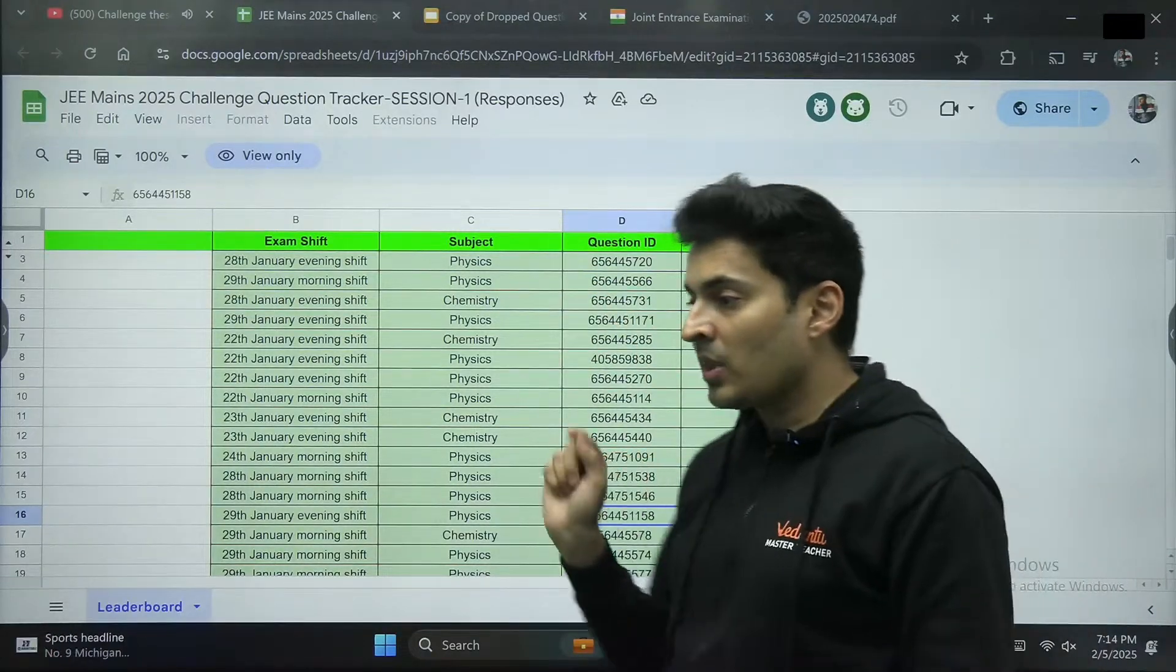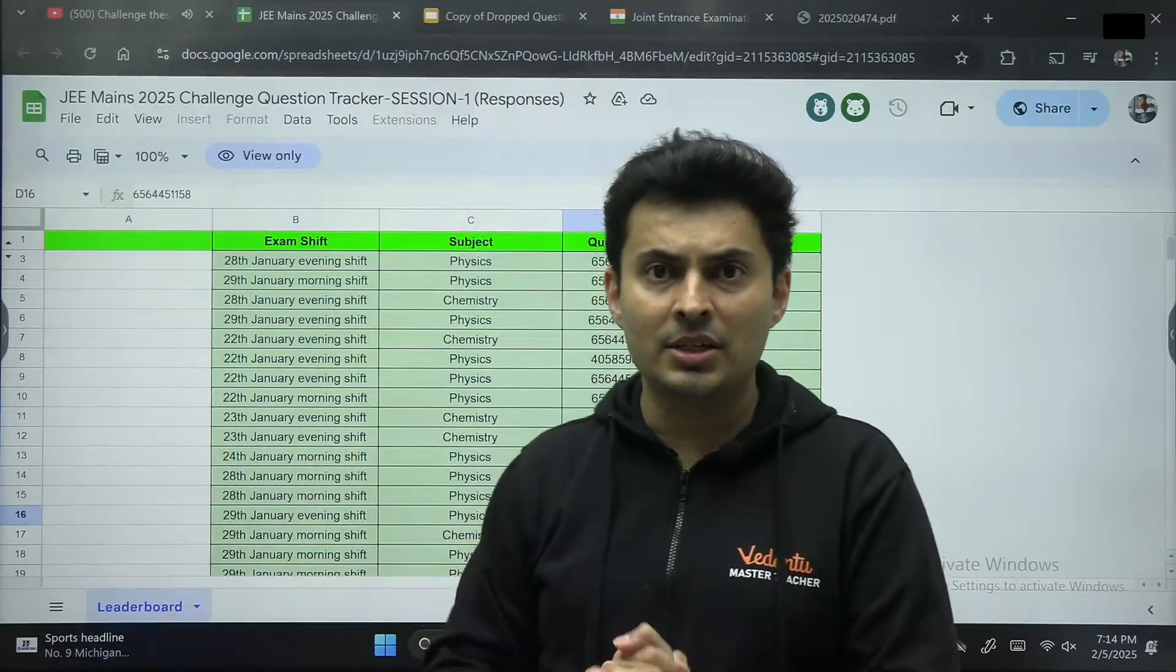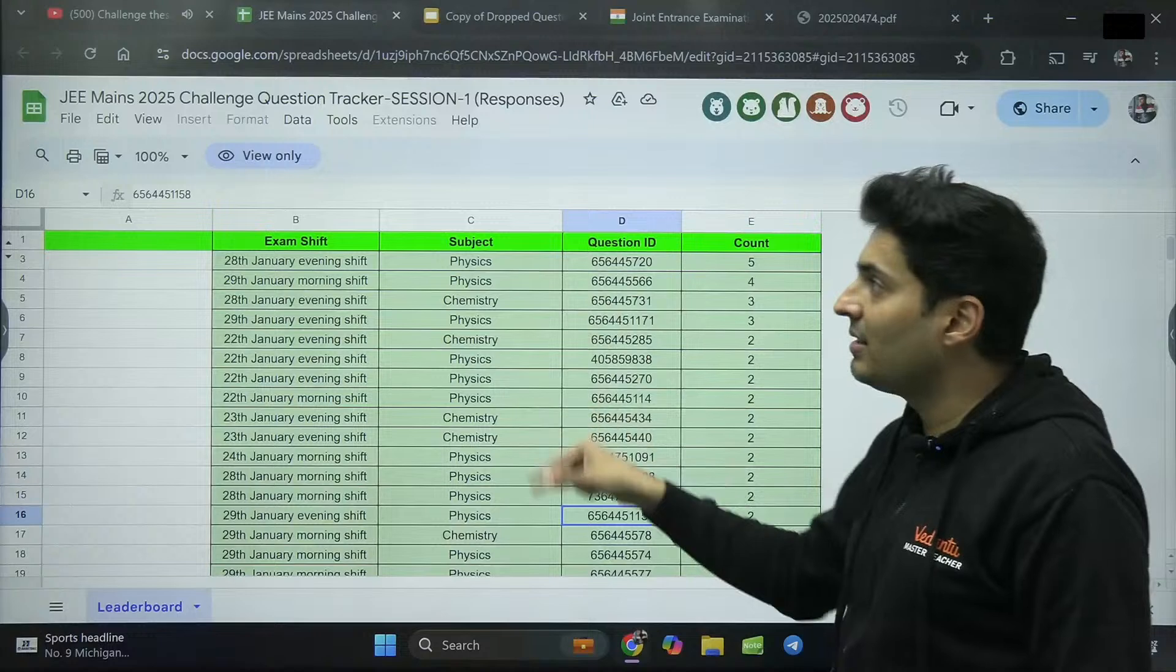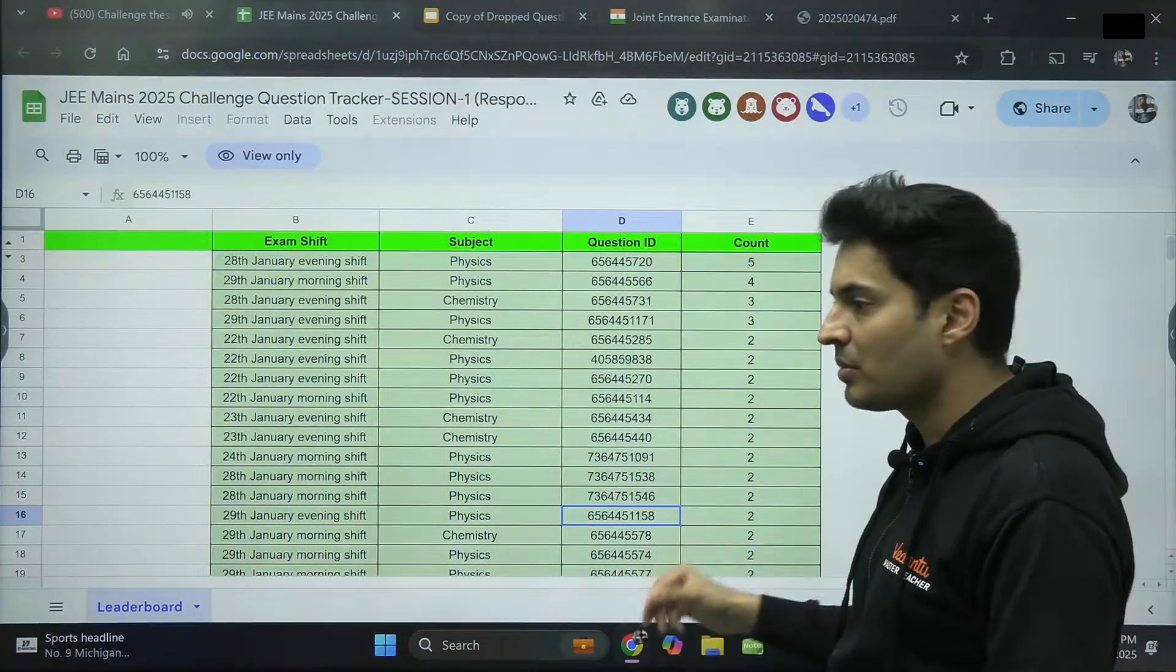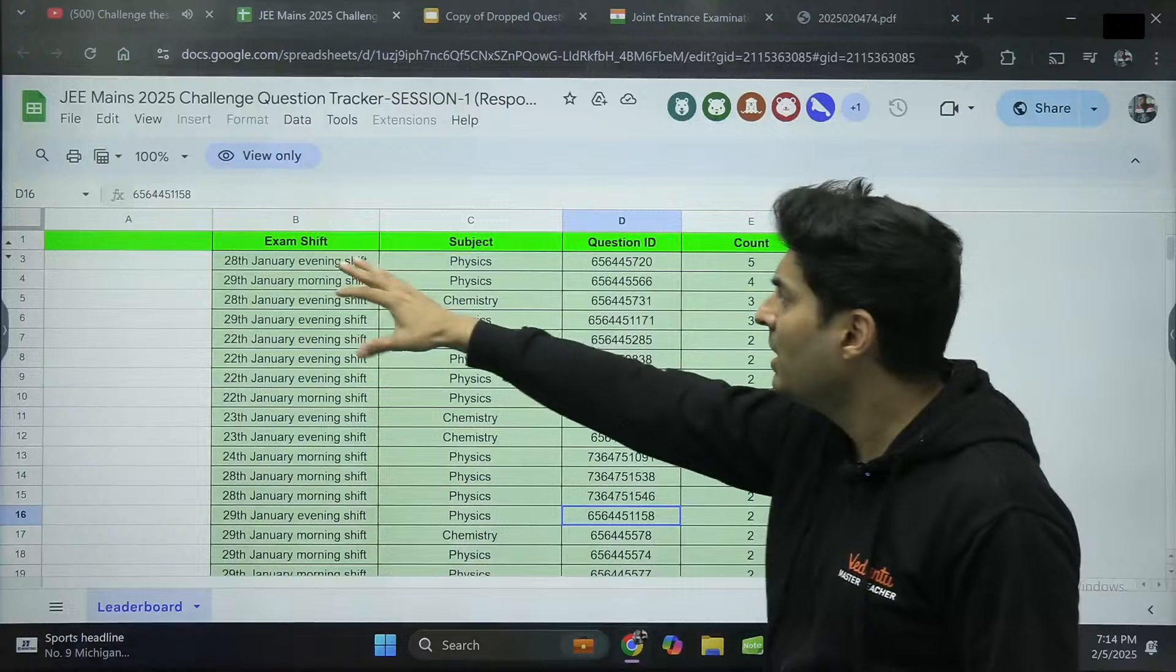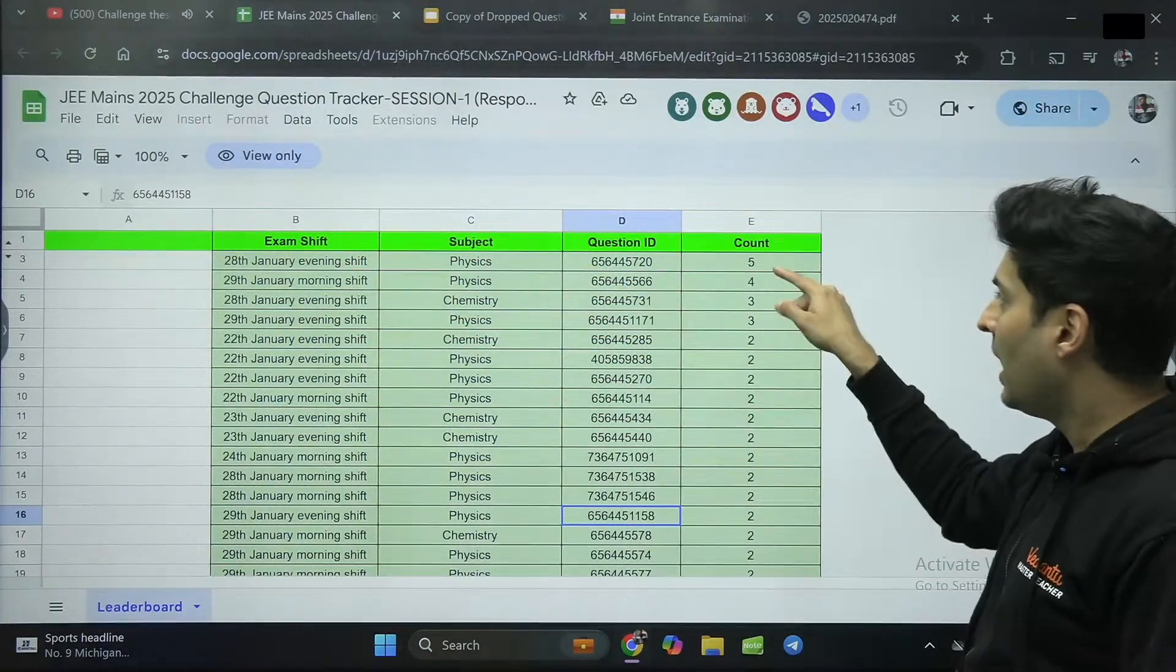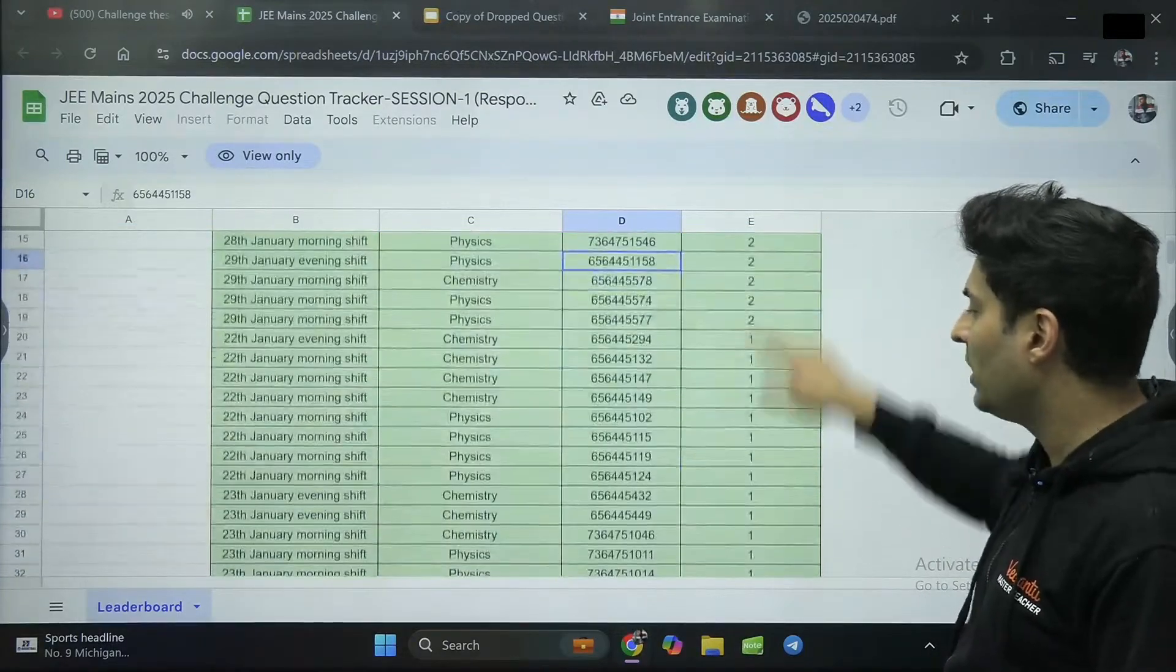Please understand it is not based on if a student feels that this question should be challenged. But actually, when students are challenging some of the questions, this link is continuously getting updated. The link is there in the description box. As you can see, we have arranged it shift wise, subject wise with the question ID and how many students are going to challenge this.